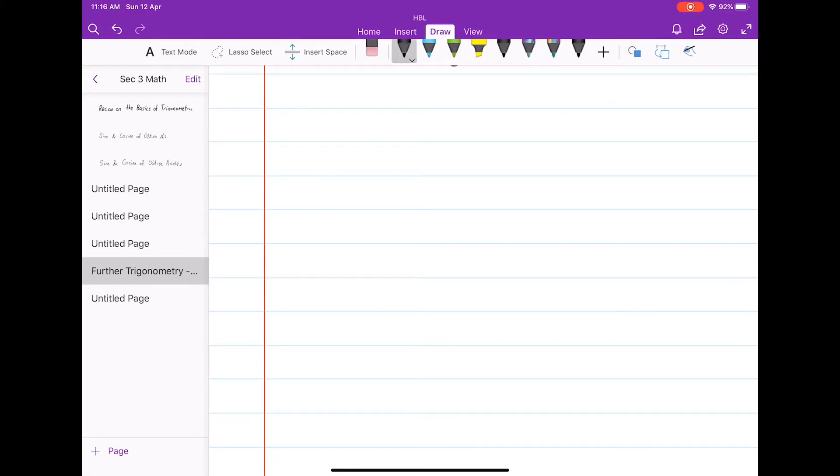So let's have an example. Suppose I have a triangle with the length 3. Let's call this 4. And then I have an angle here. Let's say it's 30 degrees.